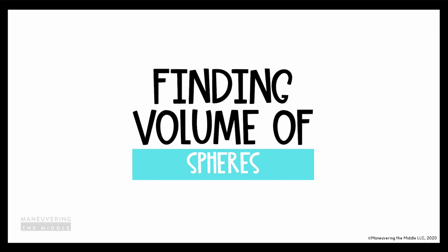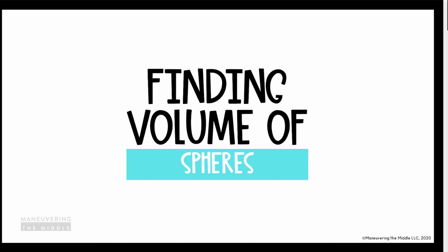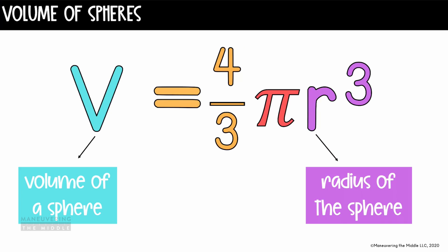In this video, we're going to find the volume of spheres. Let's start by looking at the formula. We'll need to multiply the fraction 4 thirds times pi times the radius cubed, or the radius to the third power. From the formula, you can see that the only piece of information we need to find the volume of a sphere is the measure of the radius. Then we can plug that into the formula, and we'll have the volume.